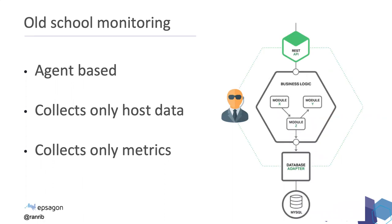In old-school monitoring, you had a service exposed through a REST API with business logic and a database all on the same server. The standard approach was to get an agent, put it on your web server, and it would ship out metrics. But these metrics are only host-level data — CPU, memory, environment info — not any application-level insights. It also only collects metrics, not payloads or information. It will just tell you there was an error, but not what the error was or what to do next.